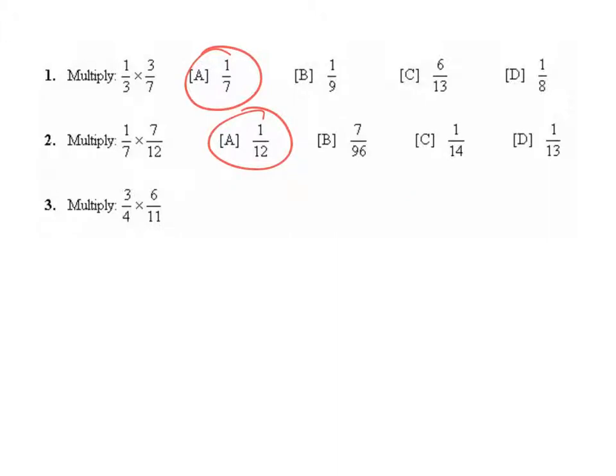Question 3: 3/4 times 6/11. We have 3 times 6 for our numerators and 4 times 11 for the denominators, which is 18/44. We can pull out a 2/2 and get 9/22.